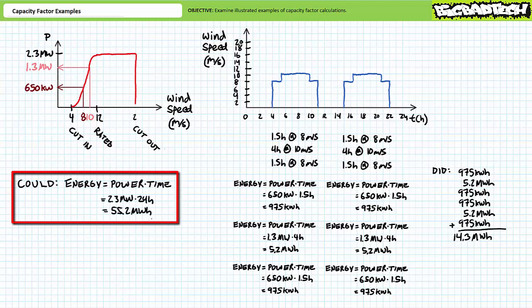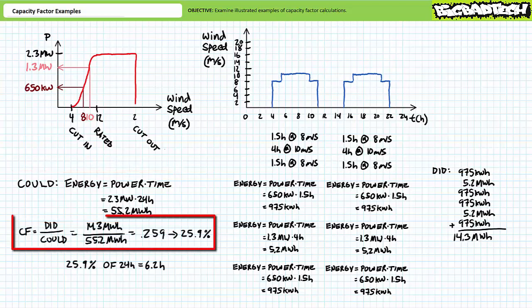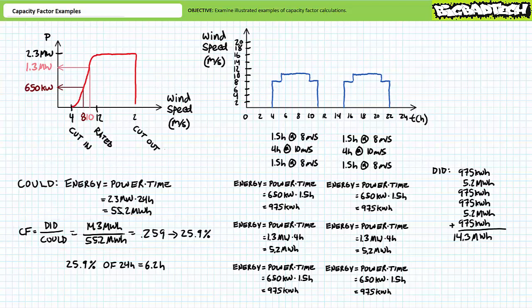Now let's determine how much energy this turbine could produce. Theoretically, this turbine could run at full capacity 24 hours a day. Energy is power times time — 2.3 megawatts expressed for 24 hours yields a theoretical maximum energy output of 55.2 megawatt hours every day. Capacity factor is did over could: 14.3 megawatt hours over 55.2 megawatt hours demonstrates the turbine has a capacity factor of roughly 25.9%, meaning it produces an equivalent amount of energy as if it ran at full capacity — 2.3 megawatts — for 25.9% of a day, roughly 6.2 hours. Each day the turbine produces enough energy as if this were true.